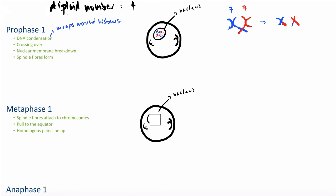In metaphase 1, the nuclear envelope has now been broken down, so we can remove the nucleus from our diagram. The homologous chromosomes align themselves along the equator — chromosome 7 from your mom and chromosome 7 from your dad align together, and chromosome 3 and chromosome 3 align on the equator as well — arranged in their homologous pairs. The spindle fibers have attached to the centromere connecting the two sister chromatids together, pulling them to the equator.